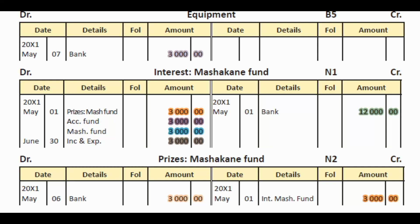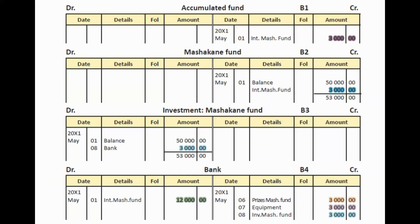Stipulation two: 25% of the interest had to be used for purchasing equipment — capitalized. When we capitalize an amount, we write it in the accumulated fund account — the same principle as with entrance fees. We transfer the interest from the interest account to the accumulated fund account. So we debit the interest account with $3,000 and credit the accumulated fund account with $3,000. Both amounts are highlighted in purple.